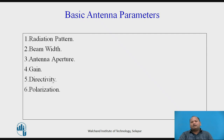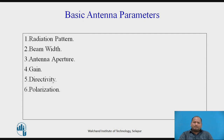Now let us look at the basic antenna parameters. To study the properties of an antenna, the basic parameters one needs to know are: radiation pattern, beam width, antenna aperture, and antenna gain.